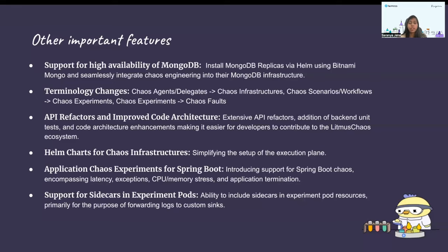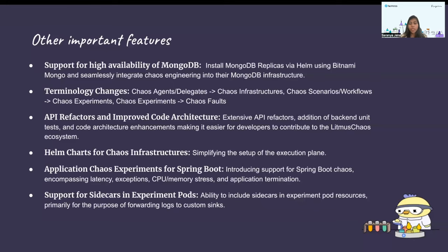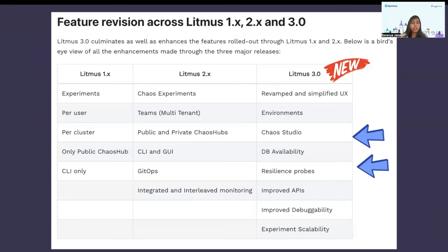Application-level chaos experiments were one of the focuses in this release. Support for sidecars in experiment pods has also been added — the community wanted to preserve experiment logs and forward them into custom sinks, so this sidecar support has been added. In the background there are also many enhancements, and in upcoming releases we are targeting a lot of new features. We have a monthly release cadence with releases every 15th of the month.